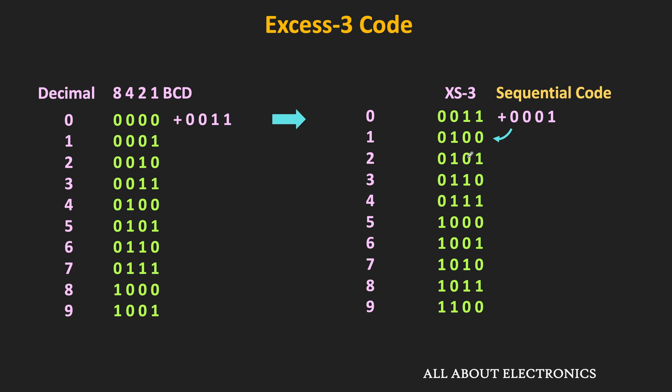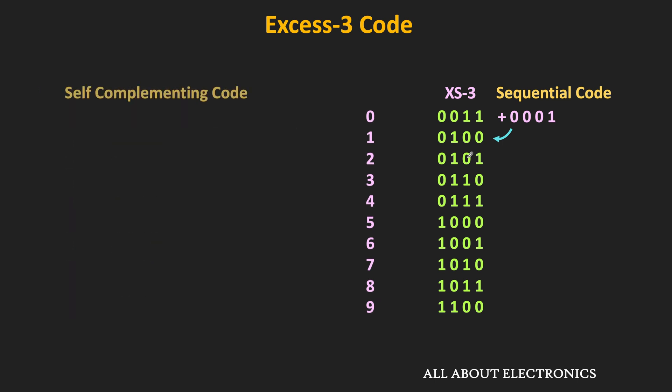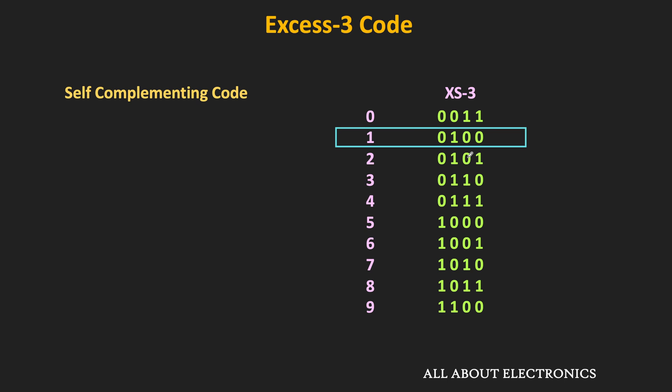Moreover, XS3 is also a self-complementing code. For such codes, the 9's complement can be found just by replacing 1s by 0s and 0s by 1s. So if we take the case of decimal digit 1, its 9's complement is equal to 8. In the code of 1, if we just replace 1s by 0s and 0s by 1s, we get the equivalent code for 8. That means this XS3 code is both self-complementing and sequential.